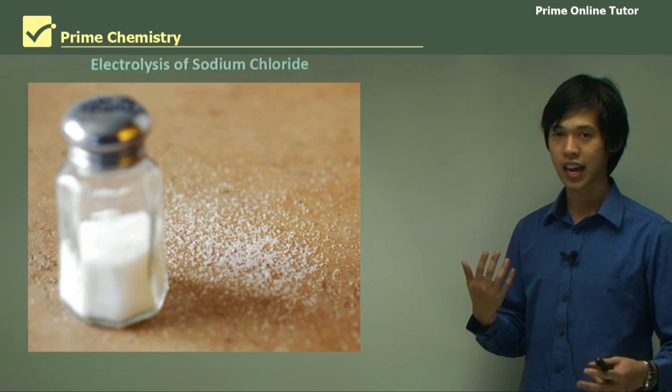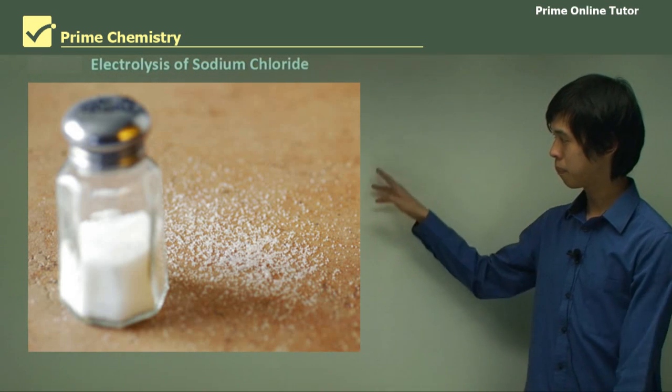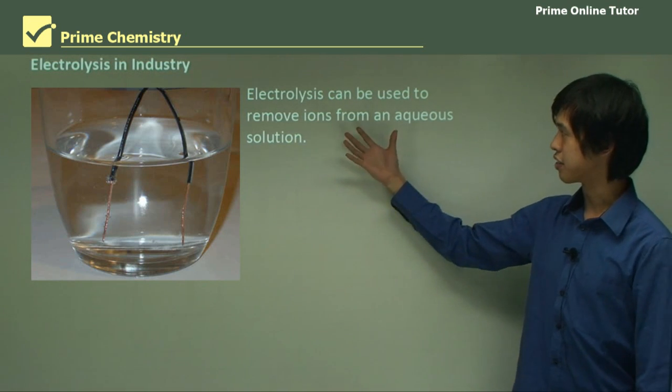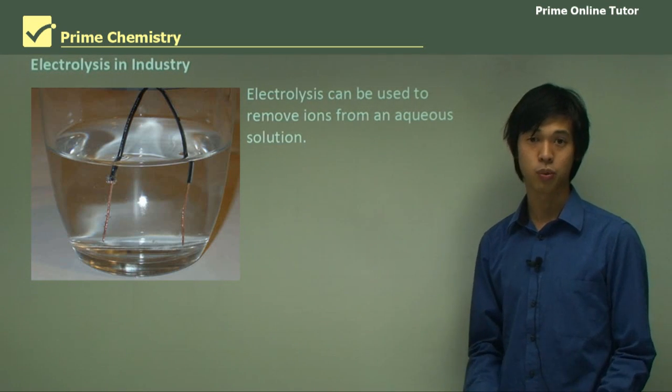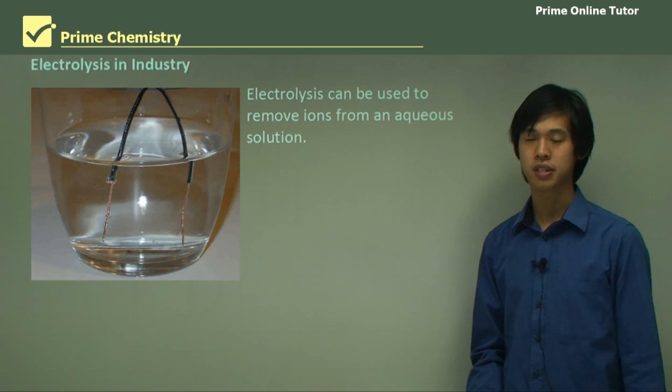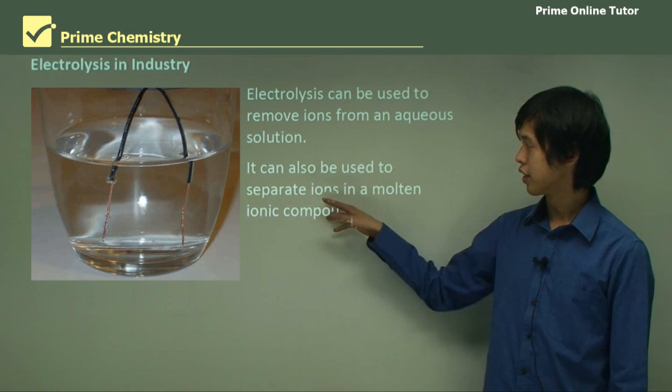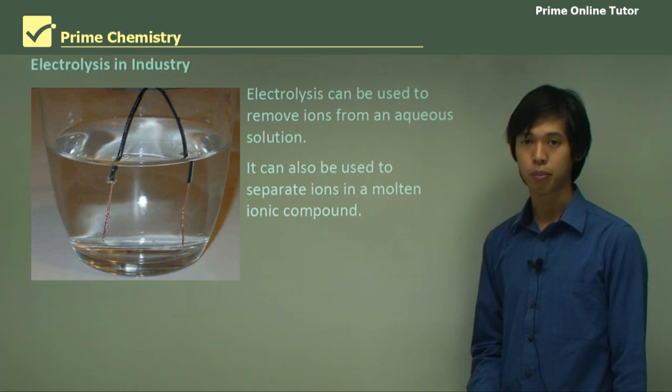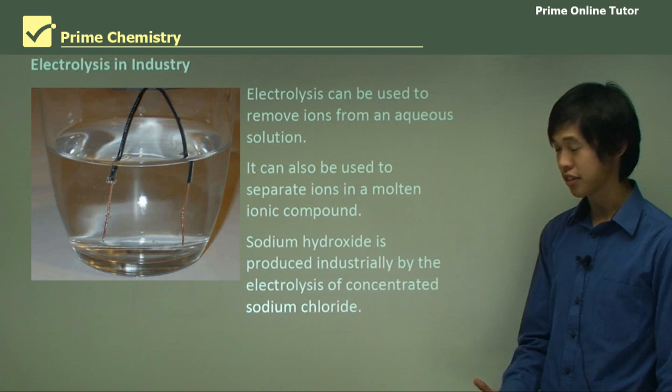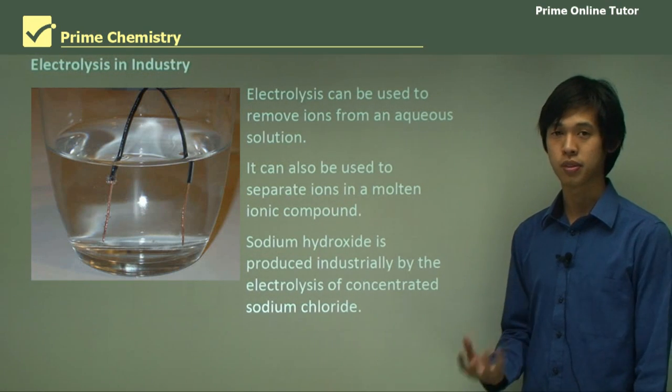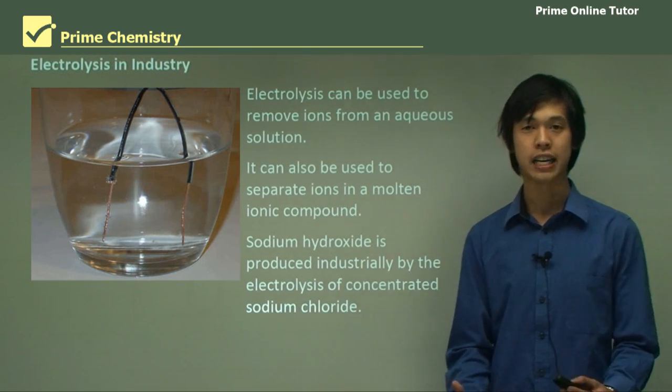Electrolysis in the industry can be used to remove ions from aqueous solutions. It's the work of Davy and Lavoisier and various other chemists over the years. It can also be used to separate ions in a molten salt ionic compound. So sodium hydroxide is produced industrially by the electrolysis of concentrated sodium chloride, and in particular we call this concentrated sodium chloride brine, B-R-I-N-E.